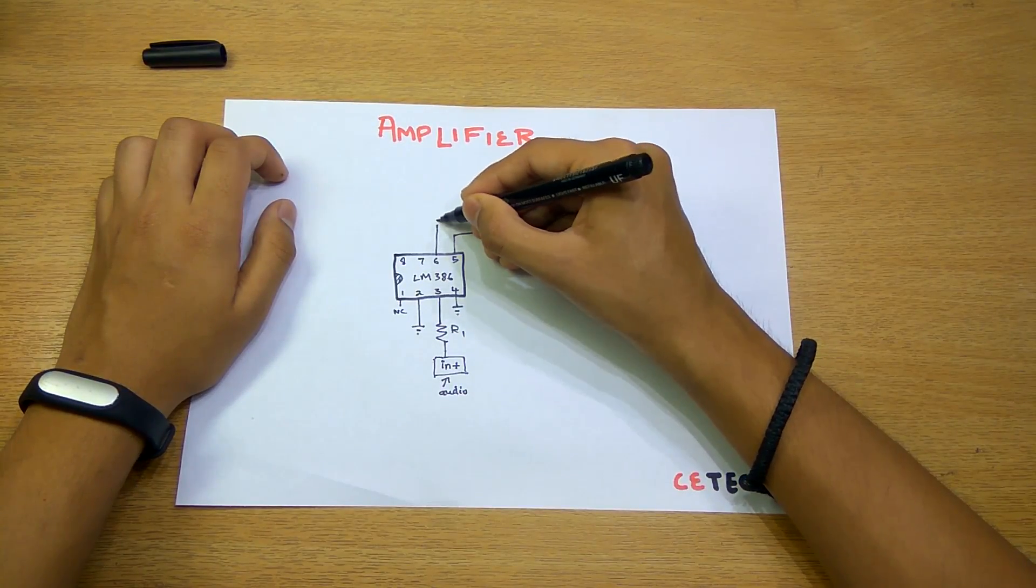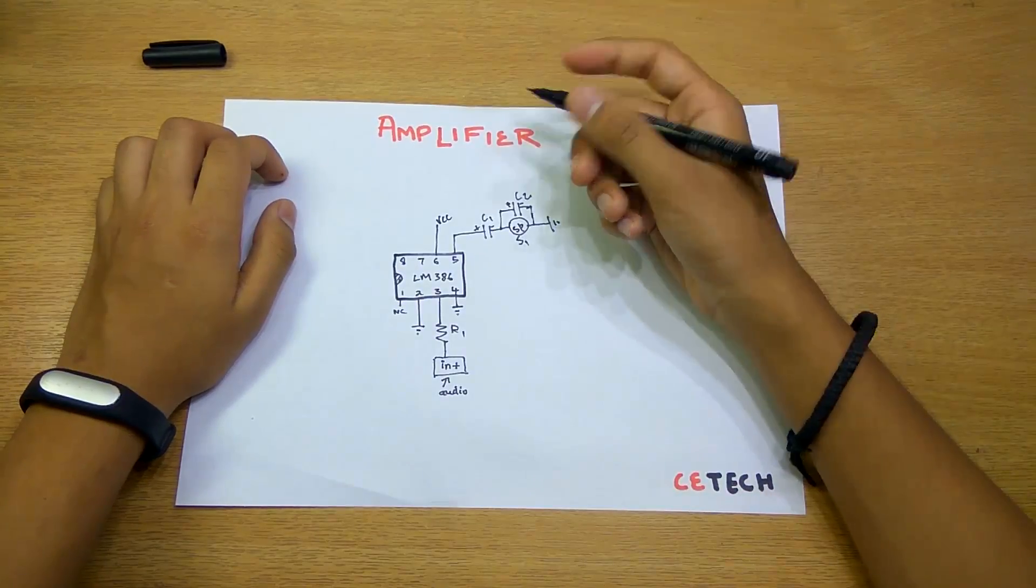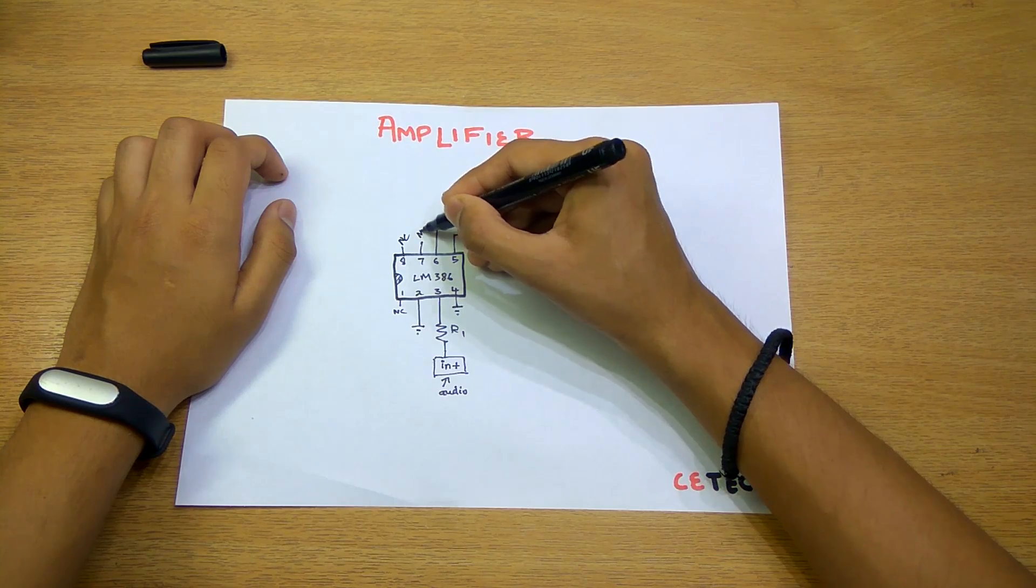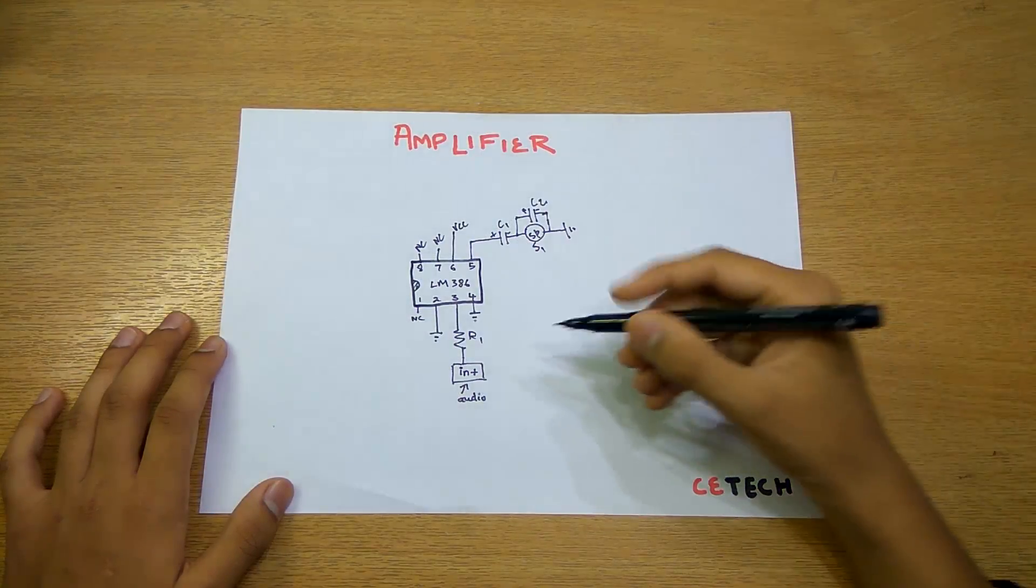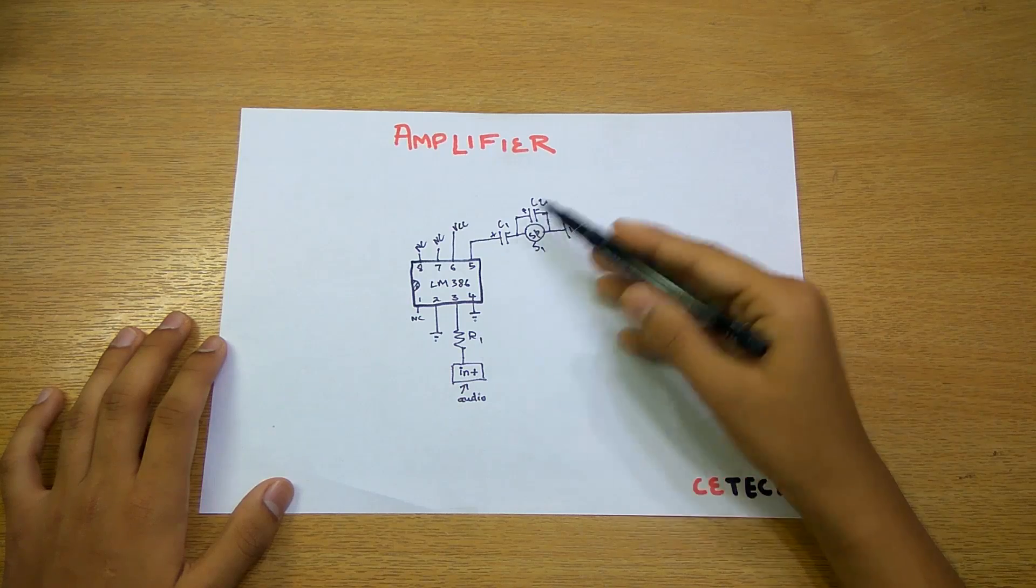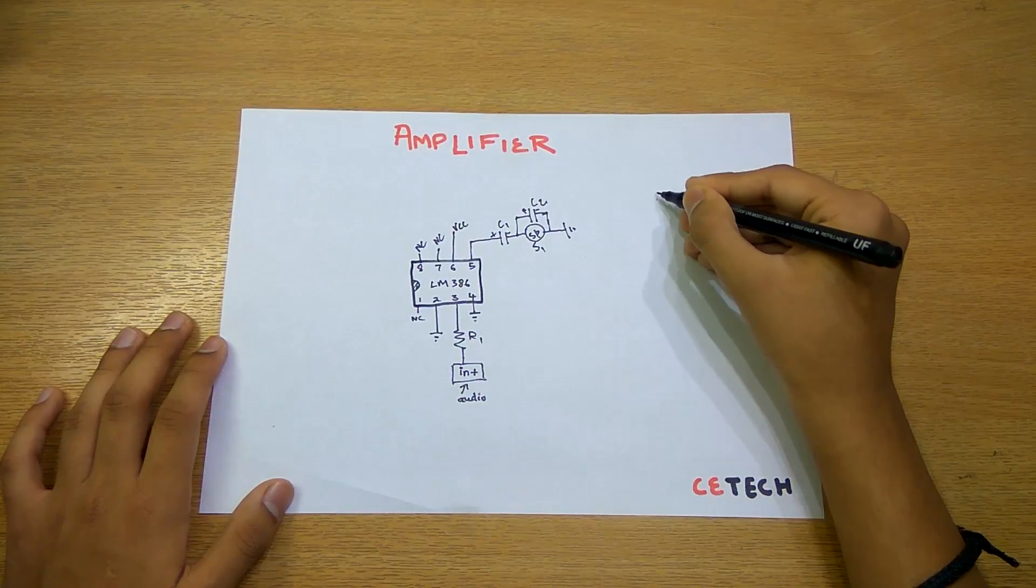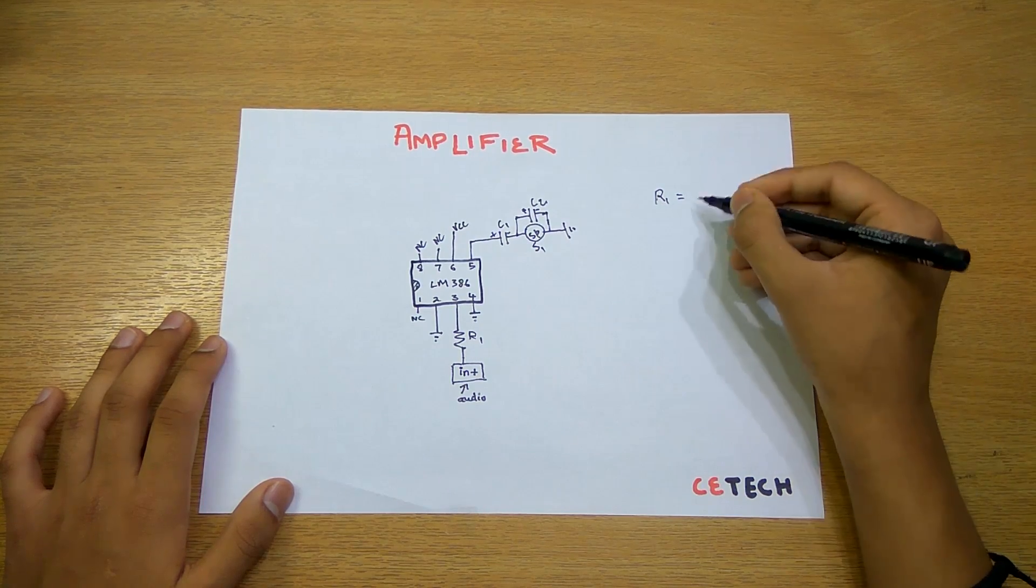The sixth pin goes to VCC, the voltage supplied to our amplifier. Both these pins are also not connected, as the first pin. Further, checking out the values of the components used.